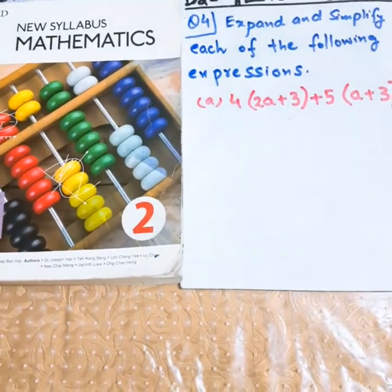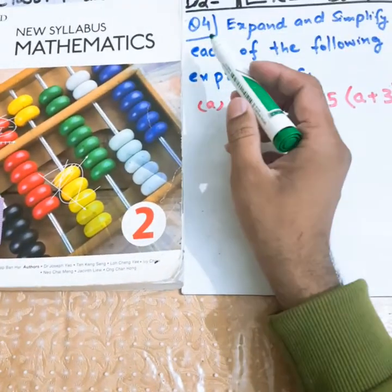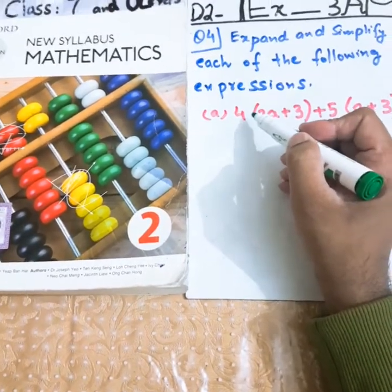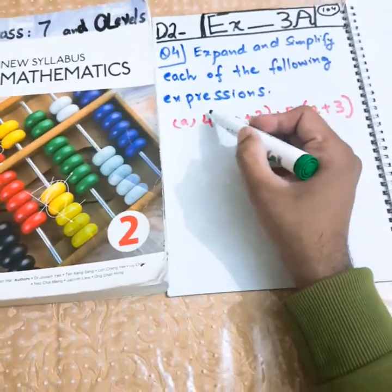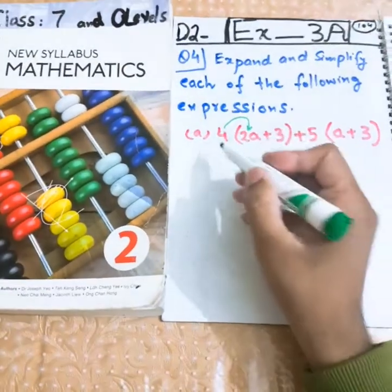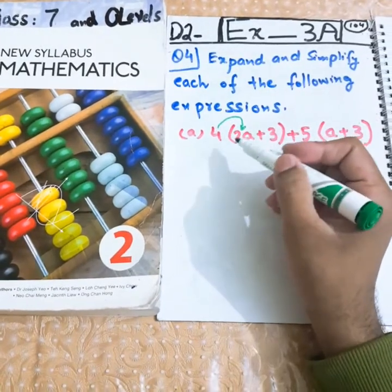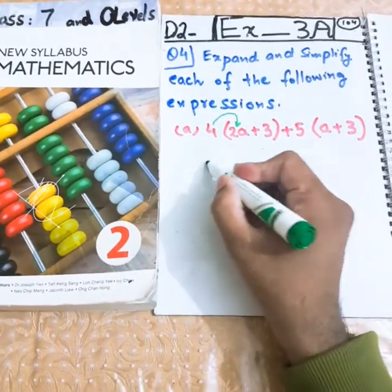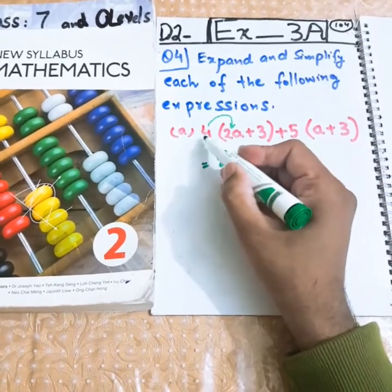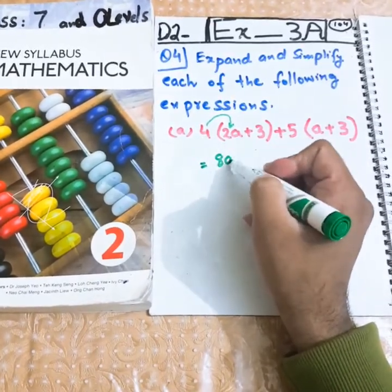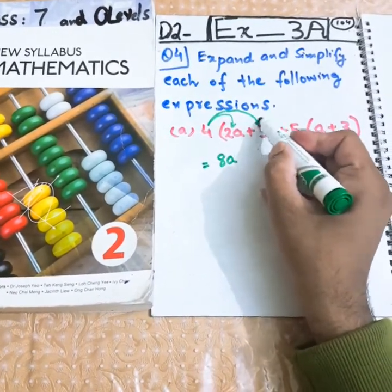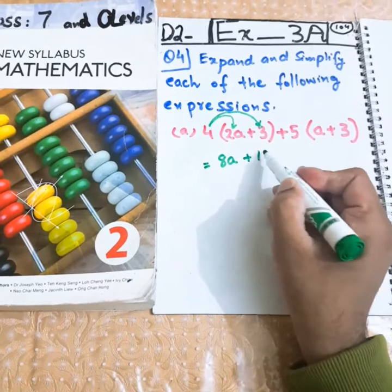As I told you in the previous questions, when something is outside the bracket, it enters inside the bracket. 4 will enter inside and be multiplied with everything inside the bracket. 4 times 2a will be 8a. 4 will be multiplied by 2, 4 times 2 is 8, and a will be as it is. Now 4 will be multiplied by 3, 4 times 3 is 12.